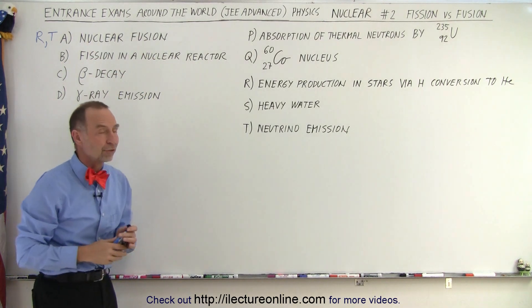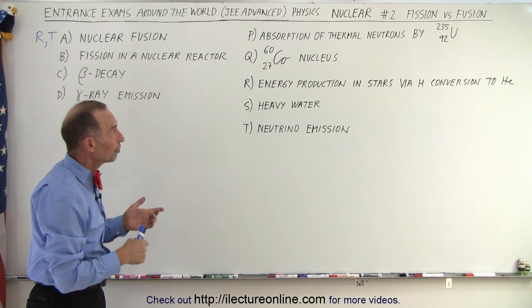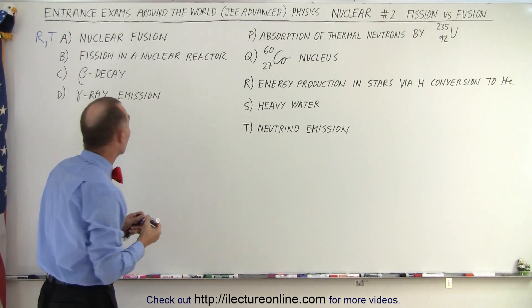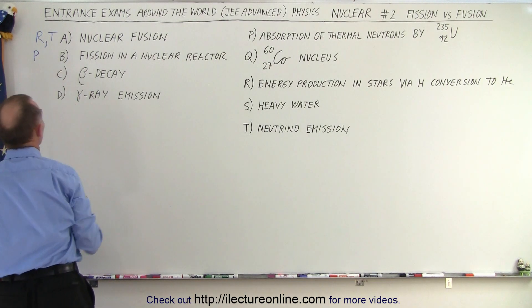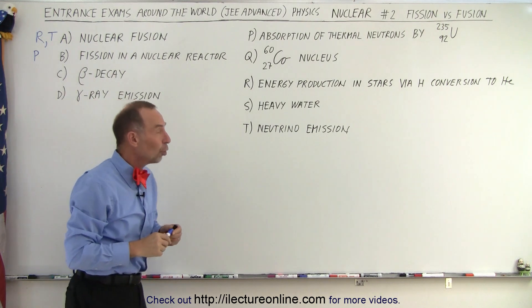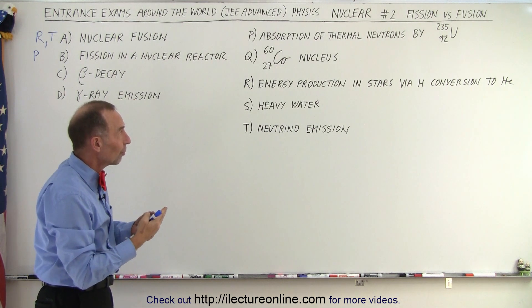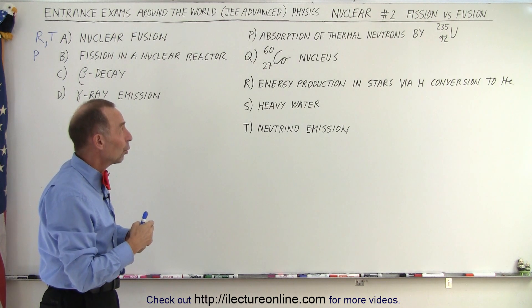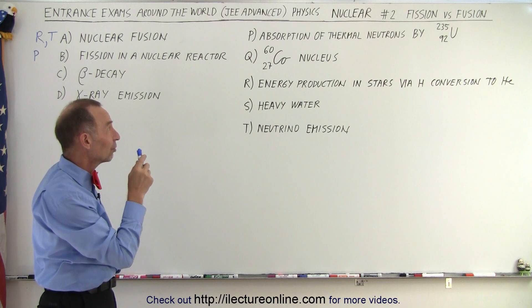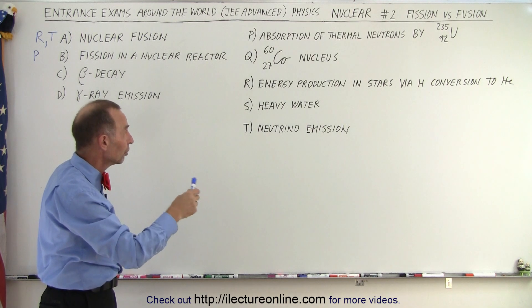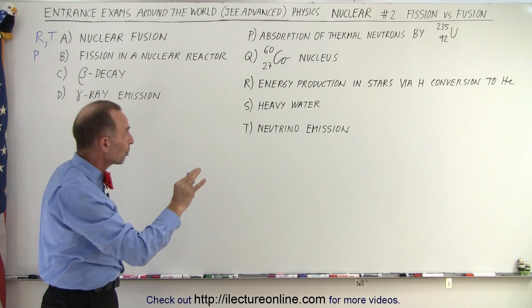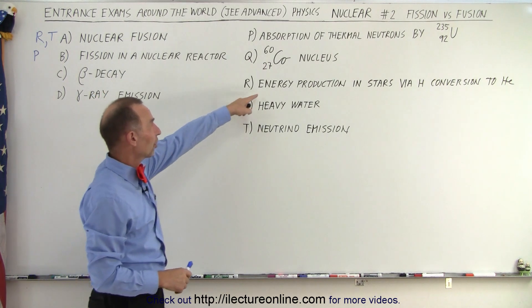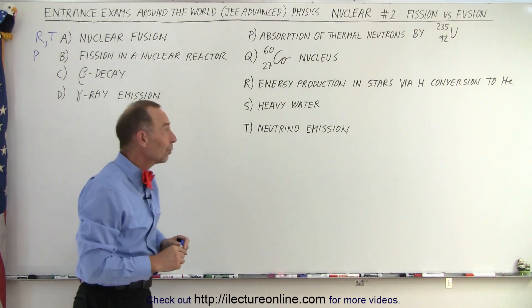How about B, fission in a nuclear reactor? Absorption of thermal neutrons by uranium-235 is something we do do in nuclear reactors. So P is an appropriate statement for B. How about cobalt nucleus? Cobalt nucleus is something that will decay from cobalt-60. It's going to change to the next heavy element after cobalt. So that is not appropriate for nuclear reactors. Energy production in stars is also not associated with nuclear reactors. We wish we could do the same because that would be very cheap and plentiful energy, but we're not there yet.